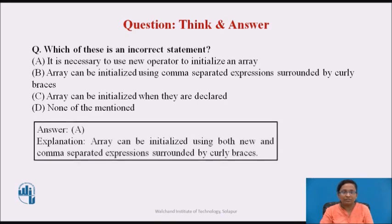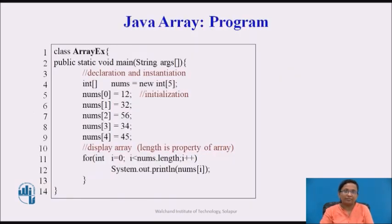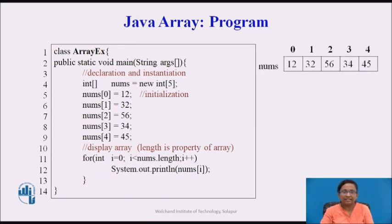The correct answer is option C. Now here is a simple Java program where array nums is declared and instantiated in line 4. Individual array elements at index 0 to 4 are initialized with values in lines 5 to 9. A for loop on line 11 is used to display array elements. In the for loop's test condition, the length property of the array is used to get the size. Array nums is initialized with values 12, 32, 56, 34, and 45, and this is the output of the program.